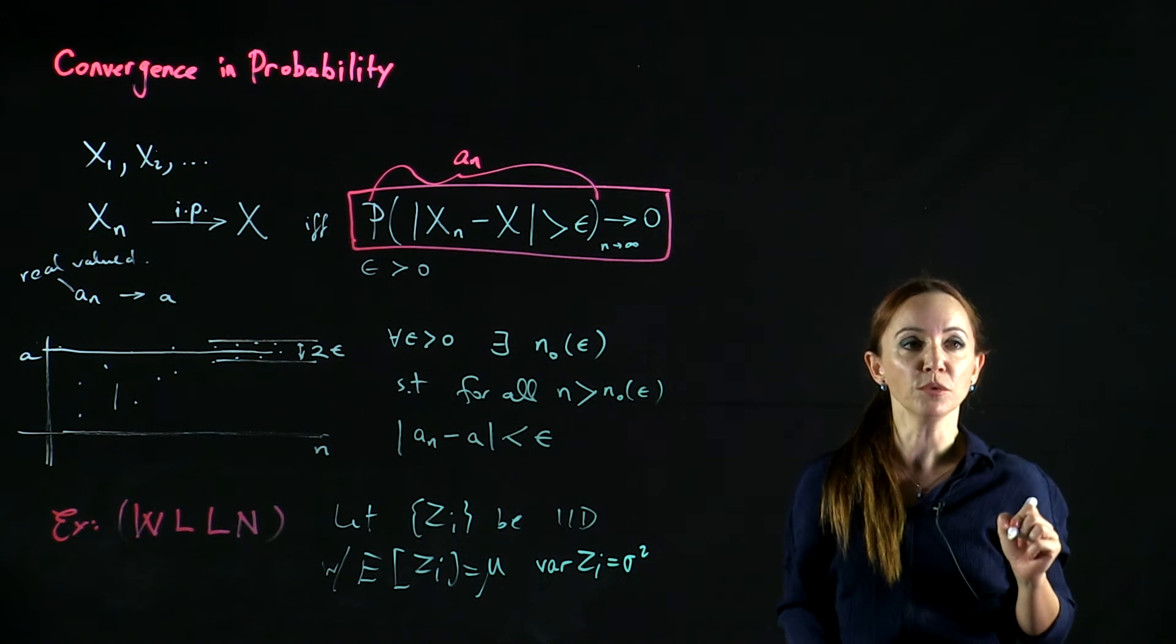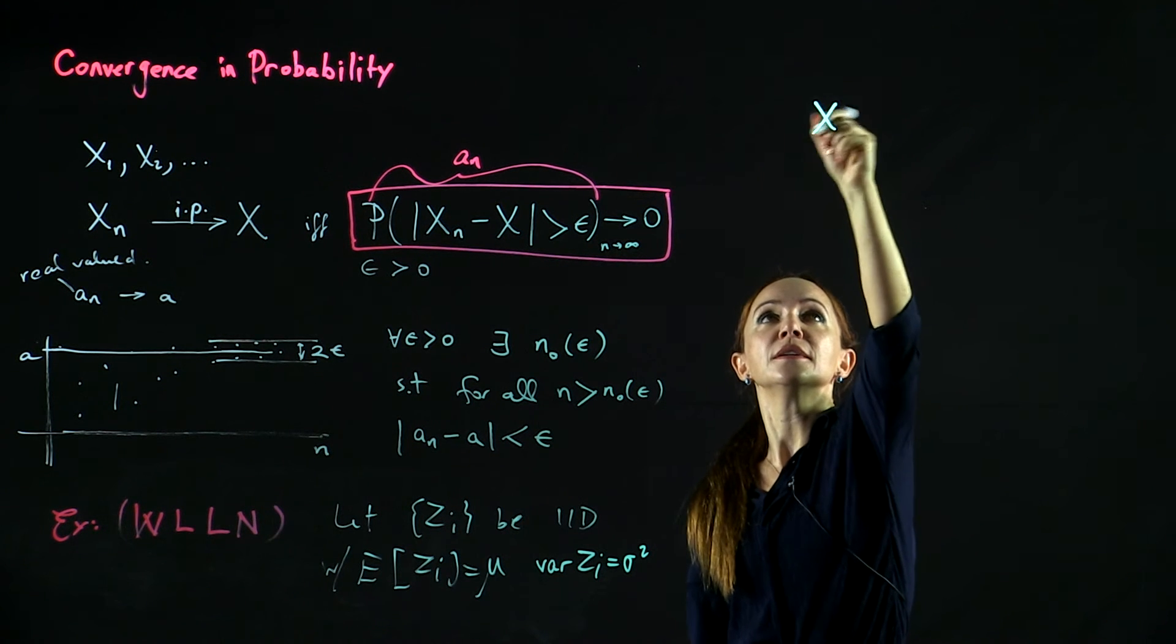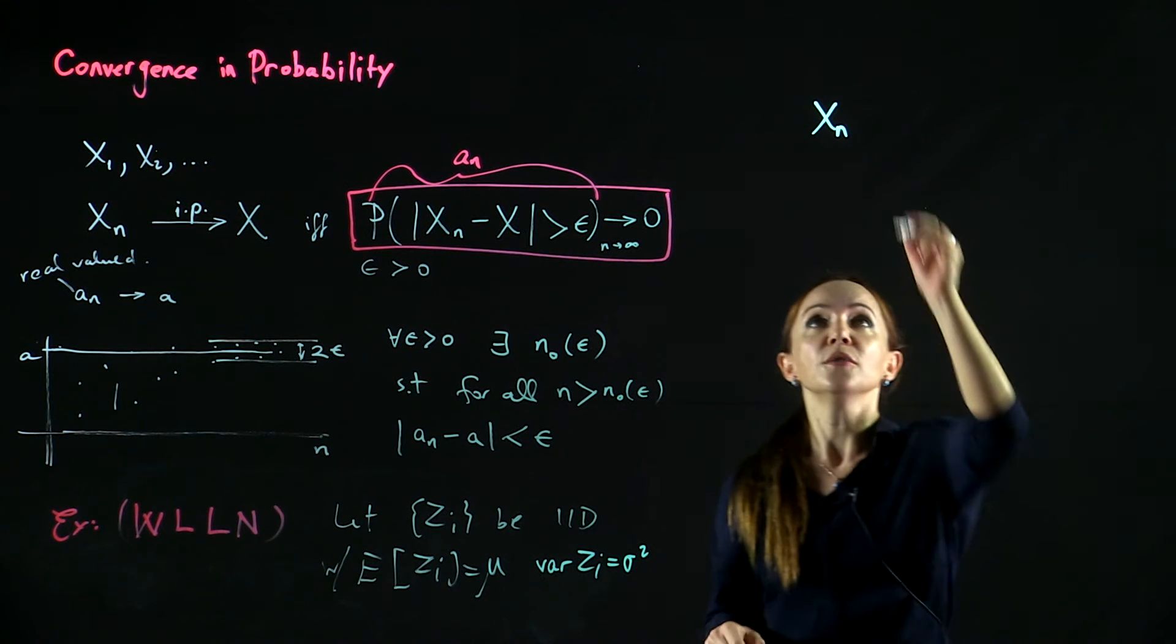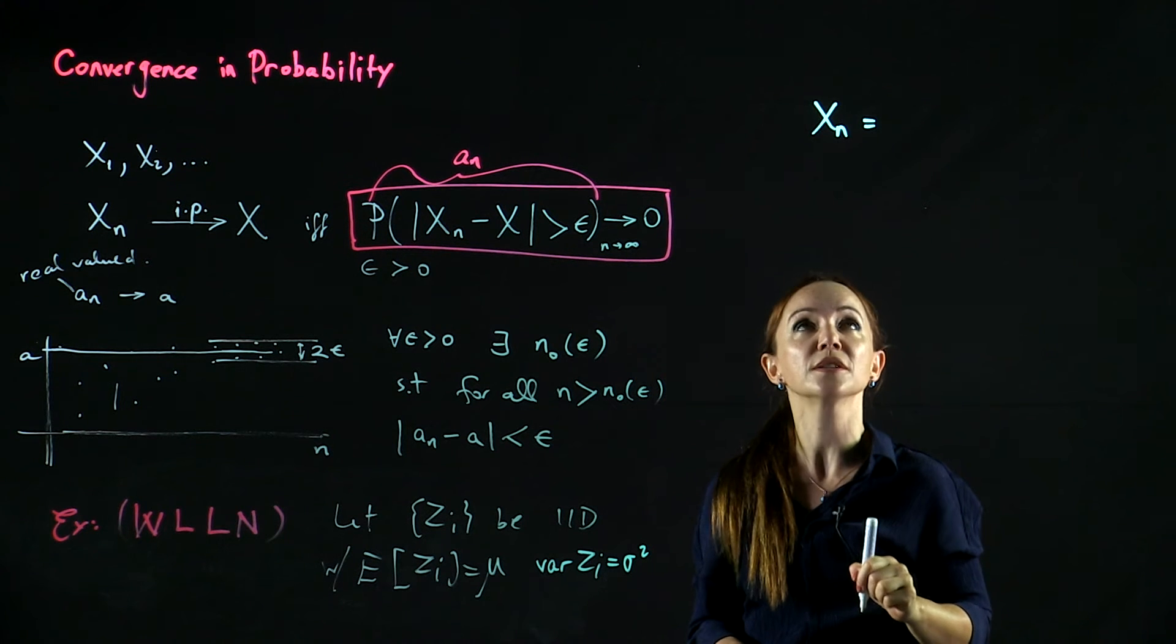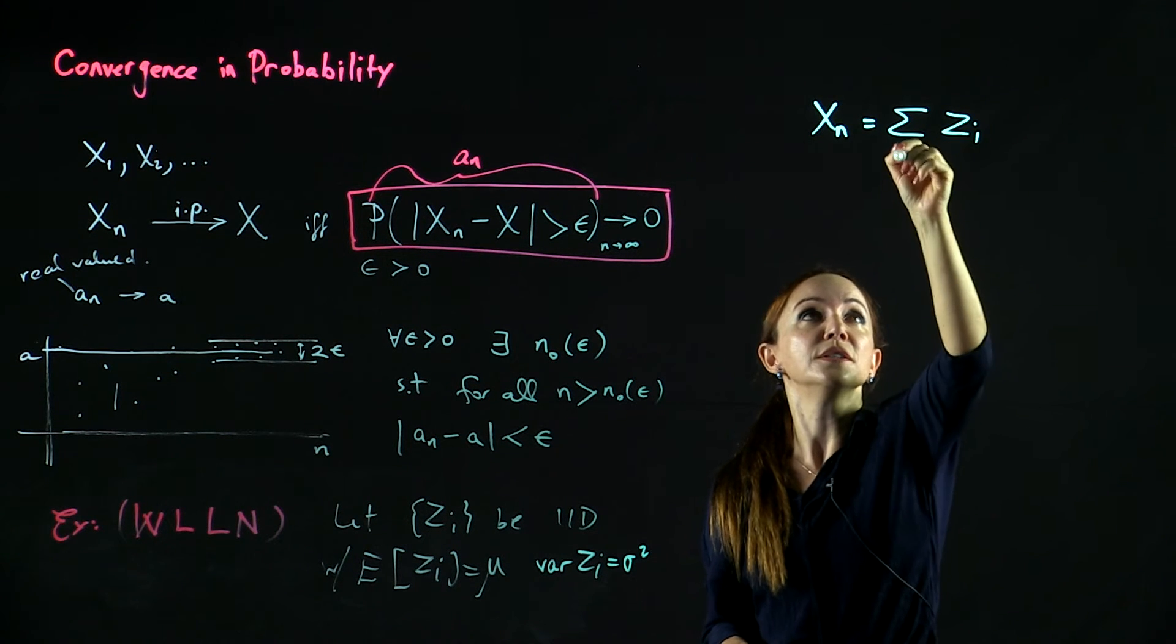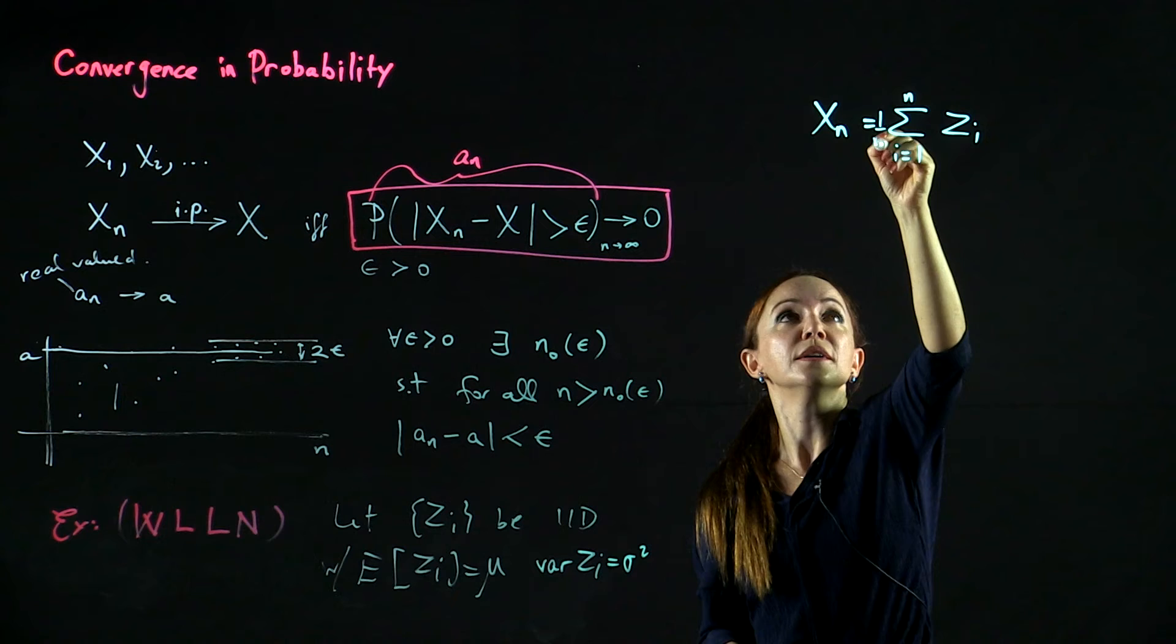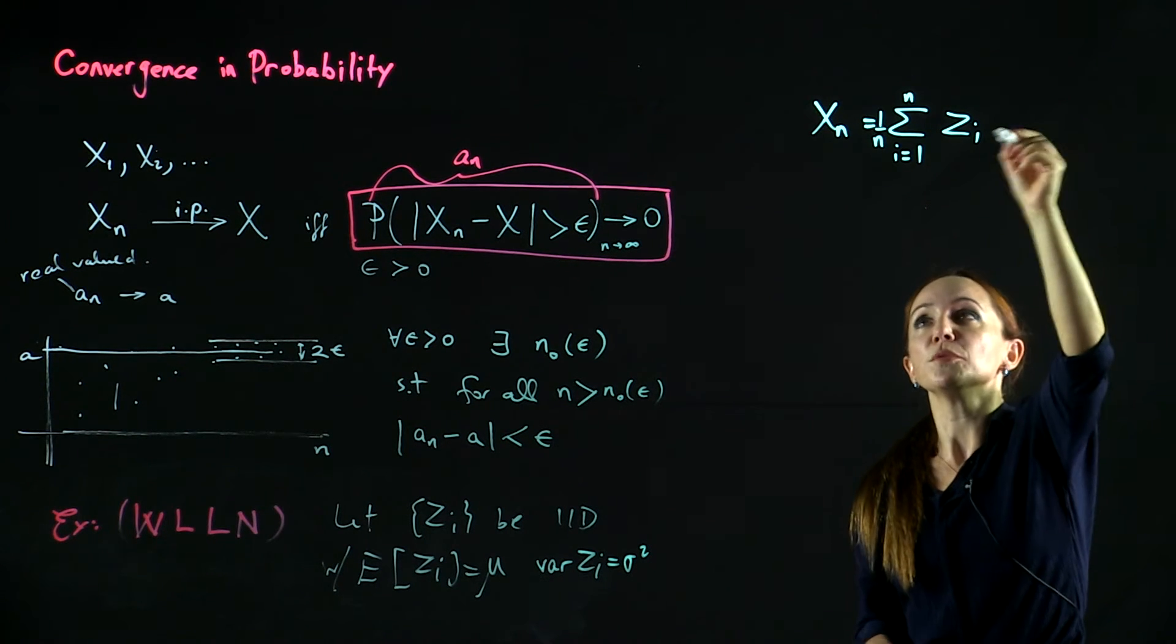We will form the random sequence XN for all n, where the nth random variable in the sequence is defined as the sample mean of the Zi from 1 to n. It is the sum divided by the number of random variables.